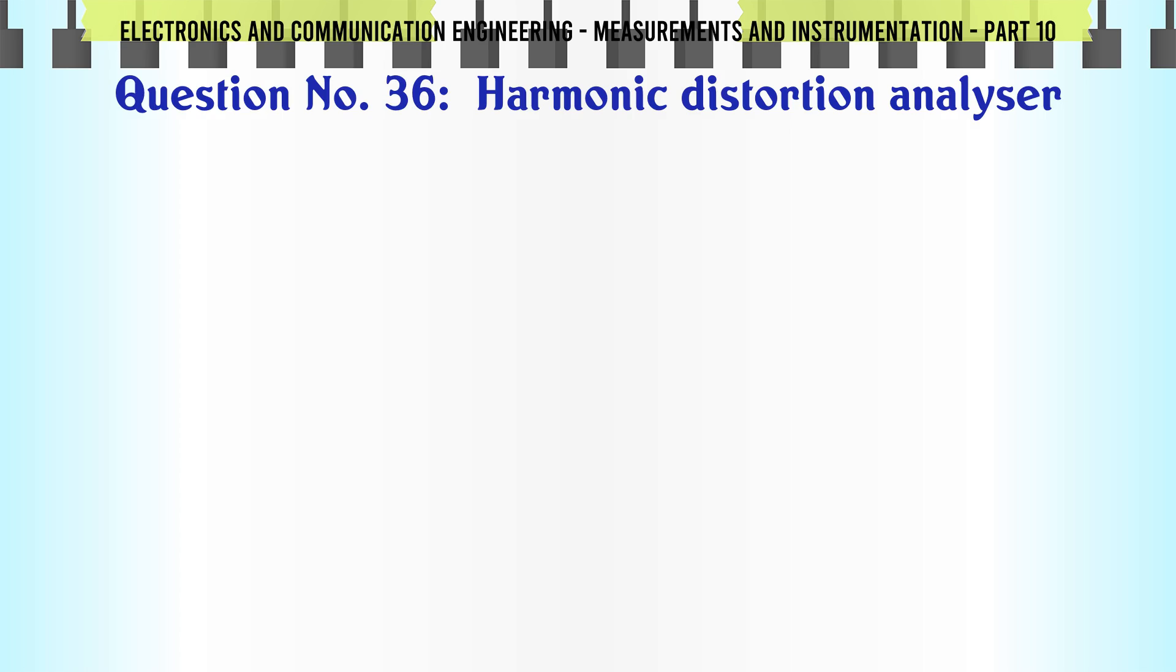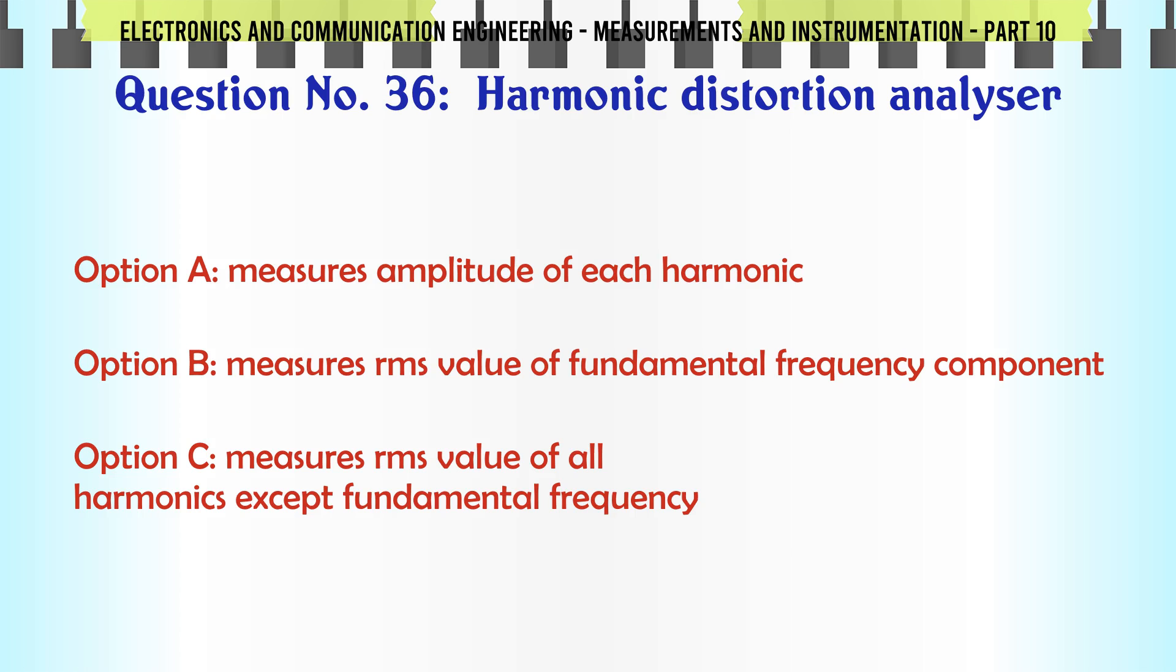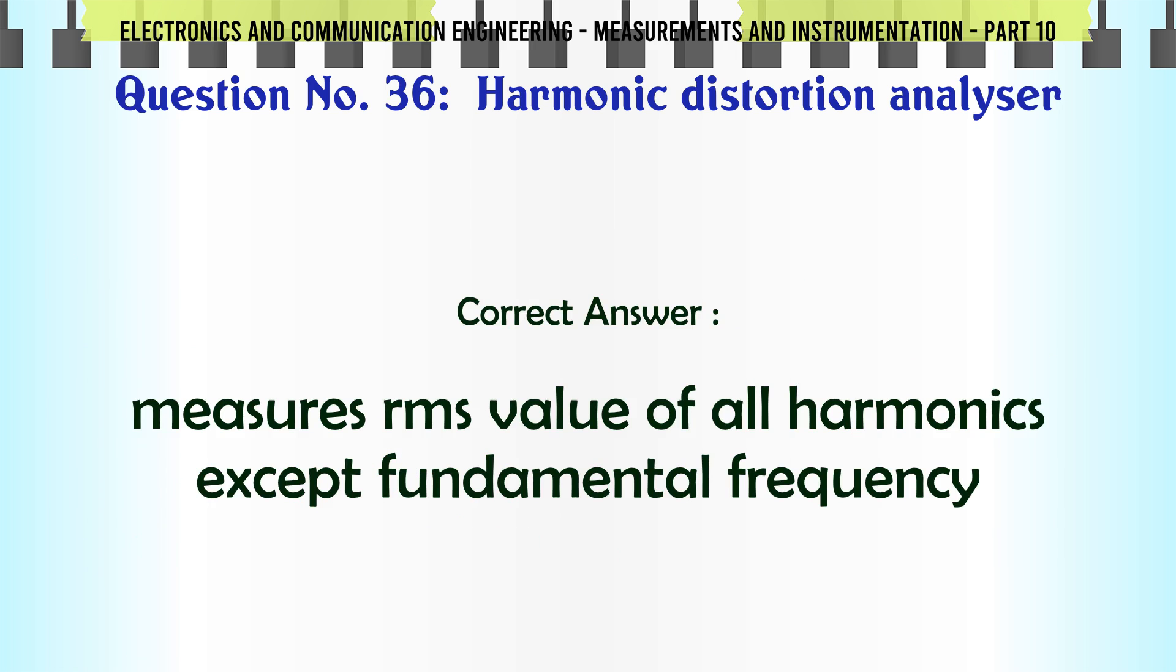Harmonic distortion analyzer: A) measures amplitude of each harmonic, B) measures RMS value of fundamental frequency component, C) measures RMS value of all harmonics except fundamental frequency, D) displays RMS value of each harmonic on screen of CRO. The correct answer is measures RMS value of all harmonics except fundamental frequency.